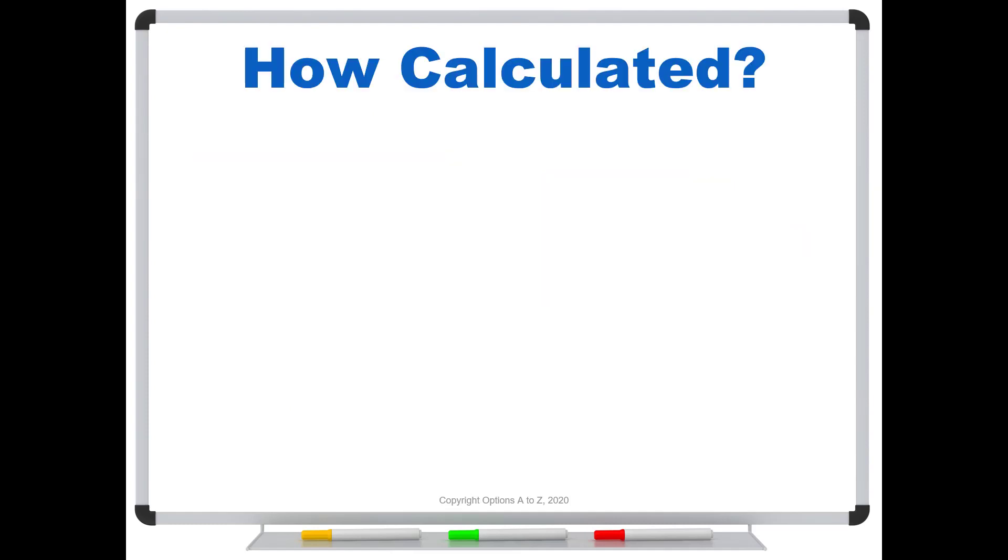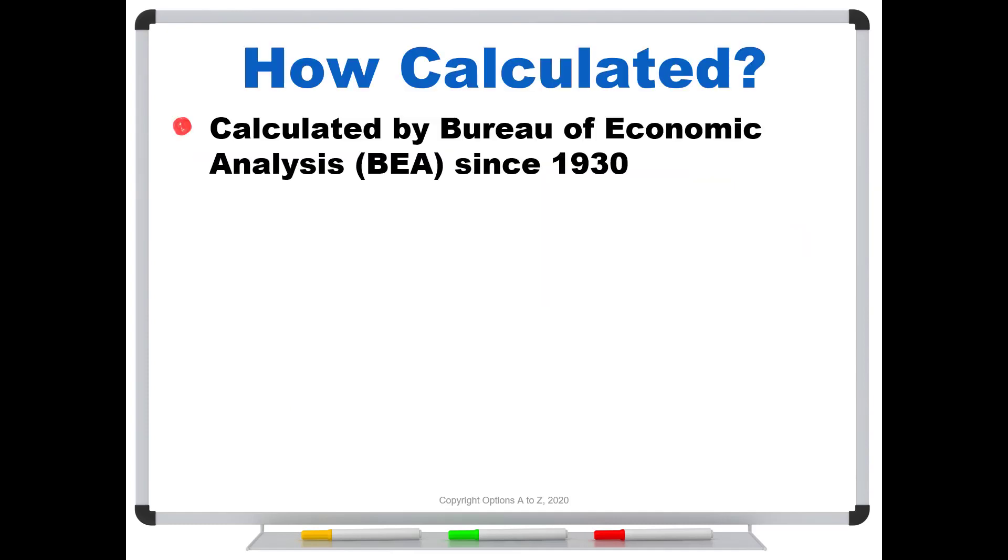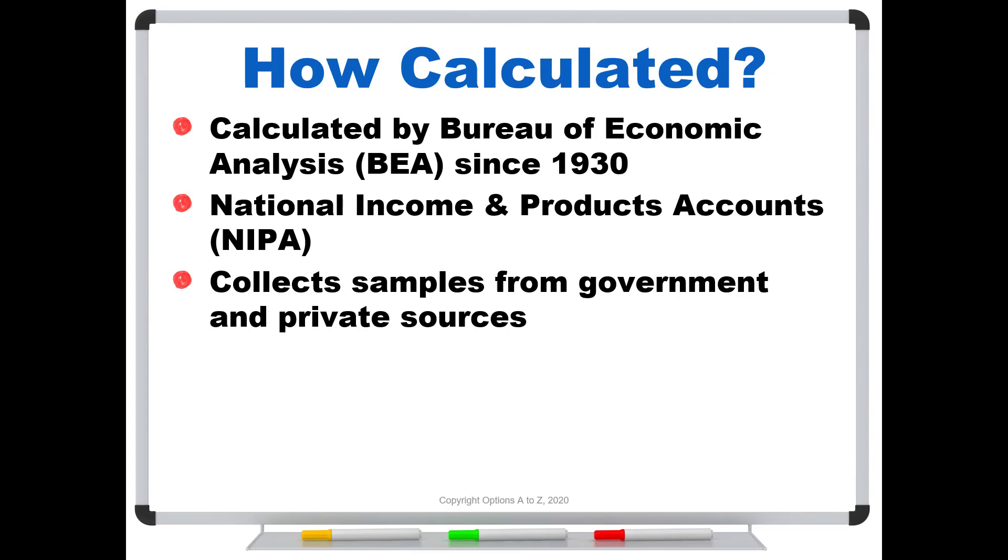So how is it calculated? Well, it's calculated by the Bureau of Economic Analysis, or the BEA, since 1930. And it's done from a fairly sophisticated accounting system called the National Income and Products Account. And basically, it just collects samples from government and private sources. So the first thing to understand, the important thing, is that it is a statistical sample. It is not actually looking at every single value of all final goods and services. It's just taking a sample and it's giving an estimate.